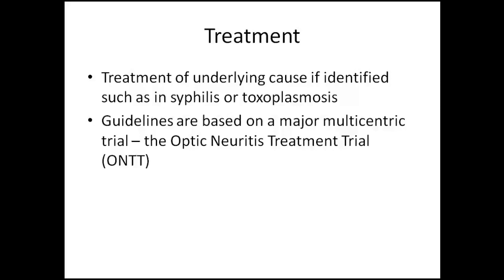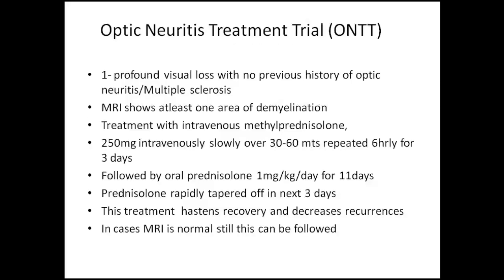Treatment is directed at the underlying cause. If the cause is found, we treat it first, and visual recovery depends on how well we treat the primary cause. If idiopathic, guidelines are given by the ONTT trial (Optic Neuritis Treatment Trial). According to the ONTT trial, if there is profound visual loss with no previous optic neuritis or multiple sclerosis, and MRI shows at least one area of demyelination, treatment is intravenous methylprednisolone 250 mg IV slowly over 30–60 minutes, six-hourly for three days — a total of one gram per day.